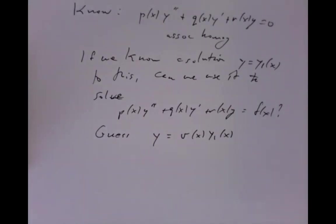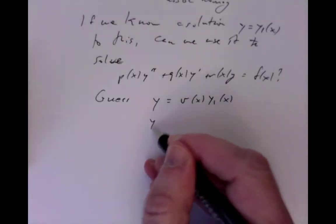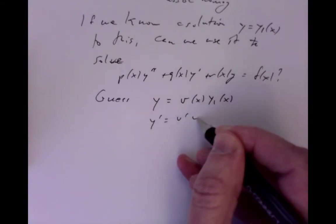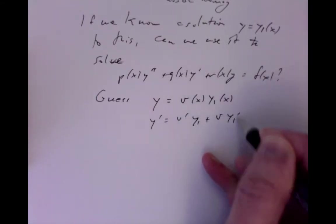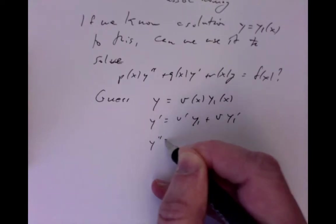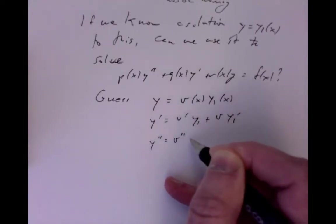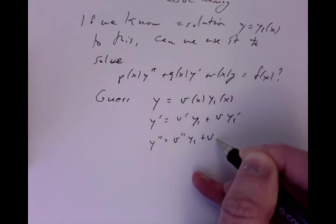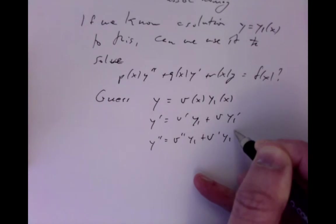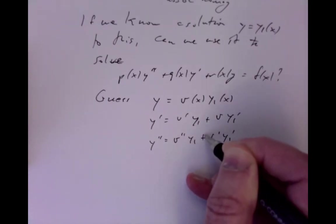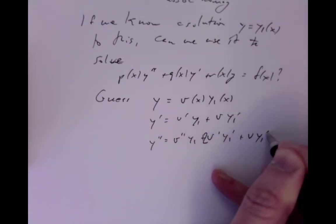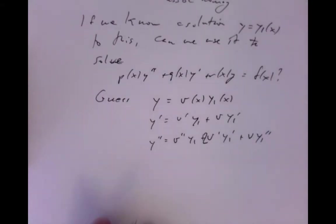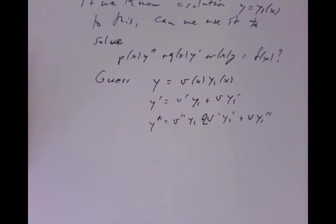Let's see what happens if we do that. We get y' = v'·y1 + v·y1', and y'' = v''·y1 + 2v'·y1' + v·y1''.